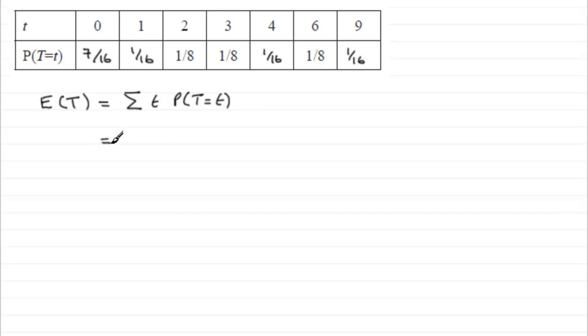In other words, we've just got to do 0, that t value, times 7 sixteenths. We're doing the sum of sigma, so sum of 1 times 1 sixteenth.